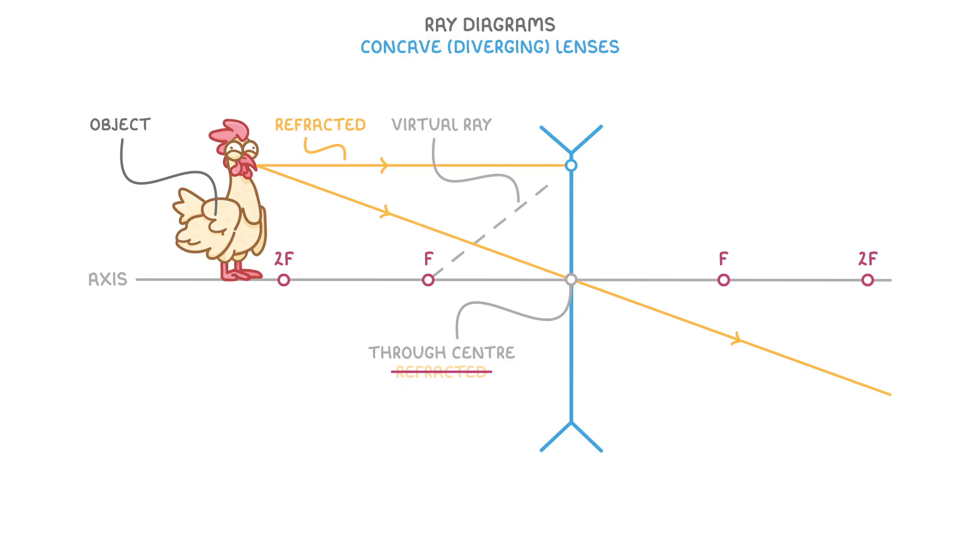We normally draw this as a dashed line between the focal point and the lens, but then a solid line as it continues past the lens.